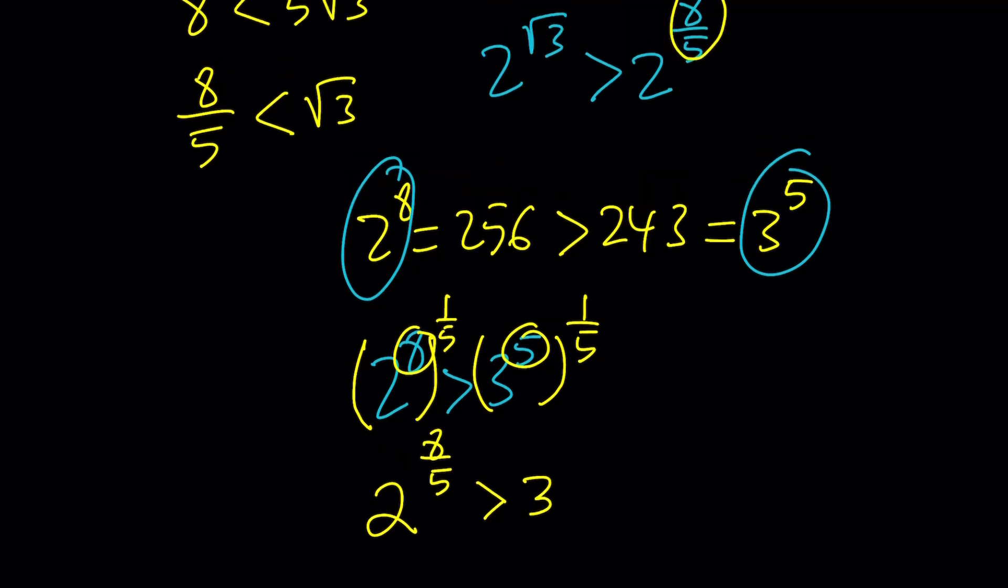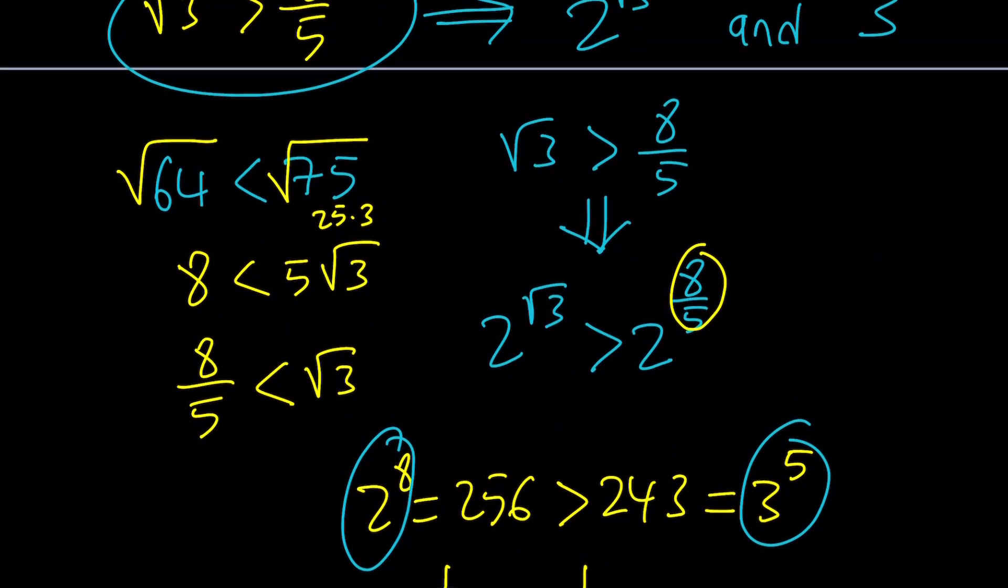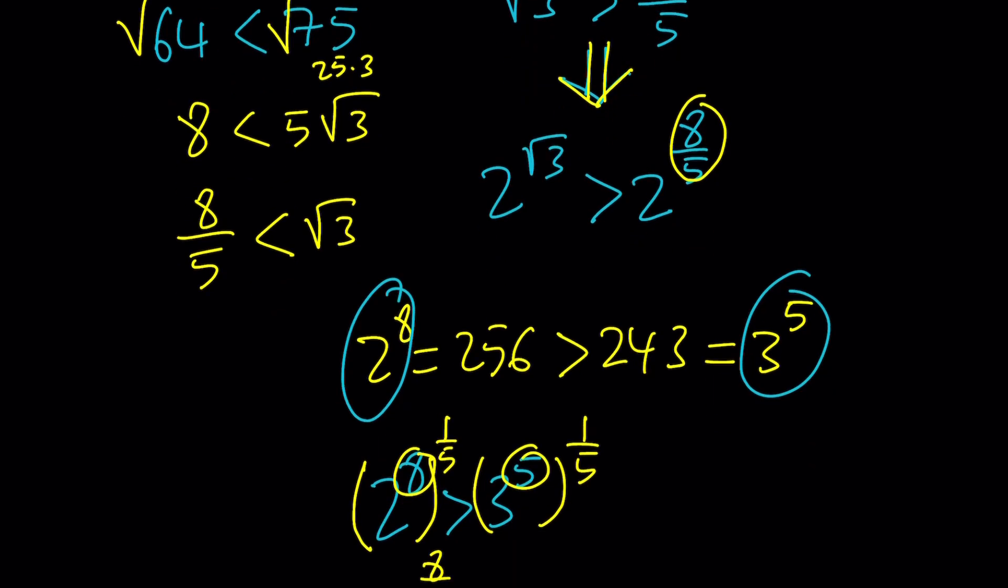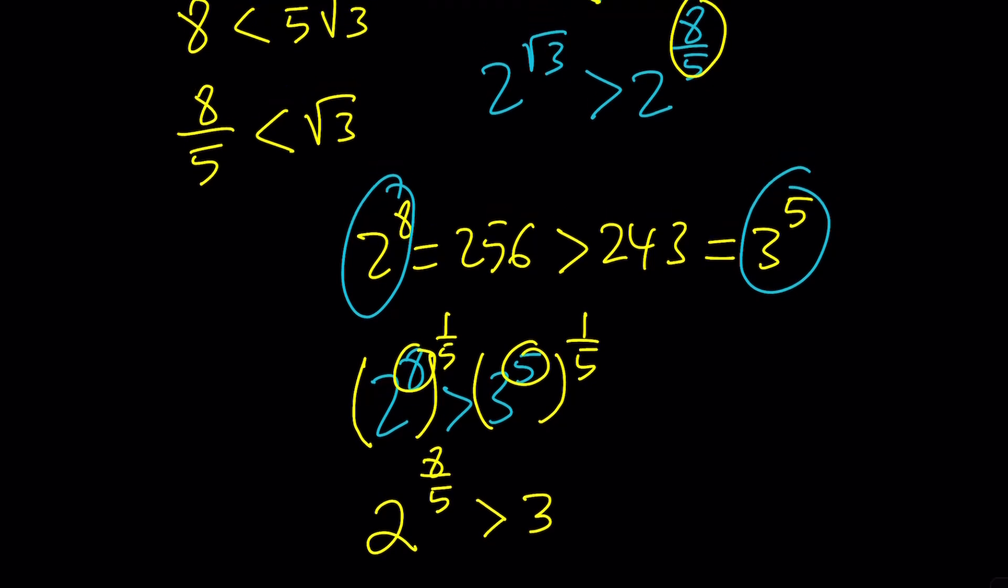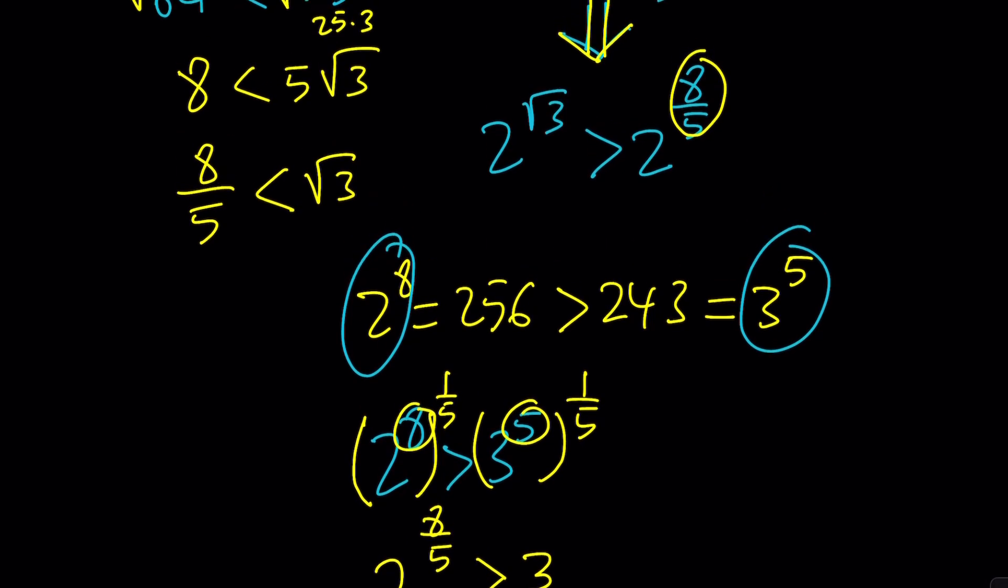That's good, because now we have this comparison, which implies this comparison, and then we can go ahead and put the 3 on the right-hand side, and that actually concludes the solution. Make sense?